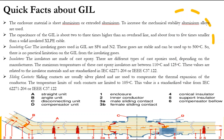Quick facts about GIL: The enclosure material is sheet aluminum or extruded aluminum; to increase mechanical stability, aluminum alloys are used. The capacitance of the GIL is about two to three times higher than an overhead line, and about four to five times smaller than a solid insulated XLPE cable. The insulating gases used in GIL are SF6 and N2 — these gases are stable and can be used up to 500 degrees Celsius, so there is no practical limitation on the GIL from the insulating gases.